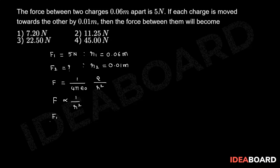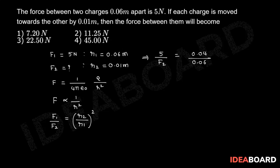Taking the ratio, F1 by F2 is equal to R2 by R1 whole square. That is 5 by F2 which is equal to 0.04 by 0.06 whole square, since each charge is moved towards the other by 0.01 meter.